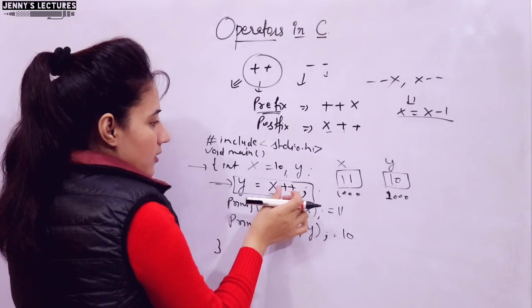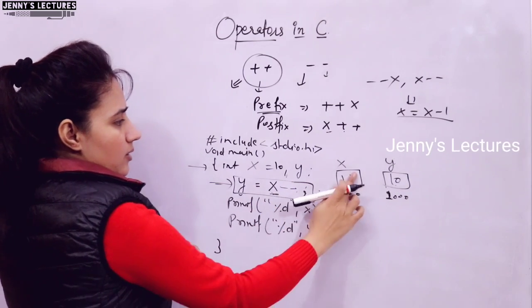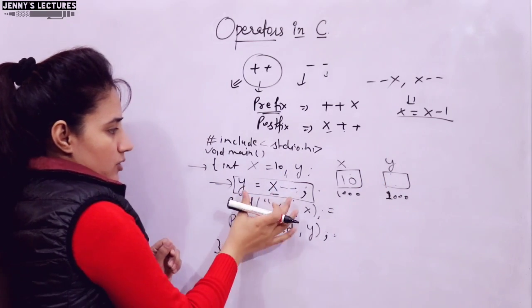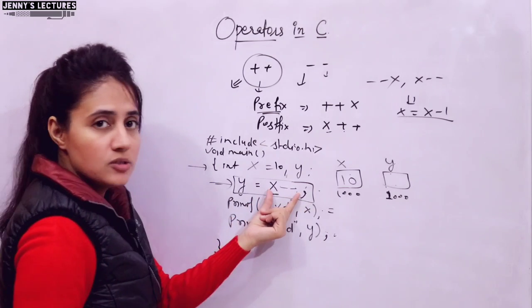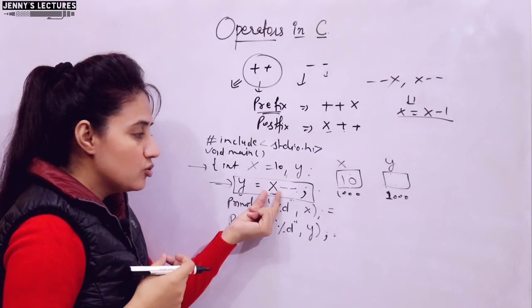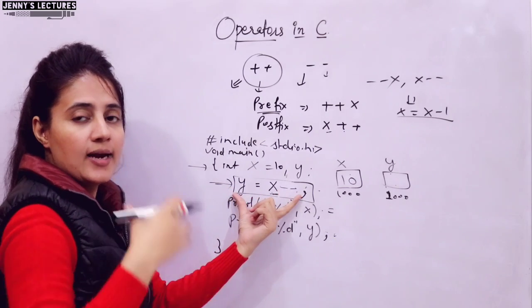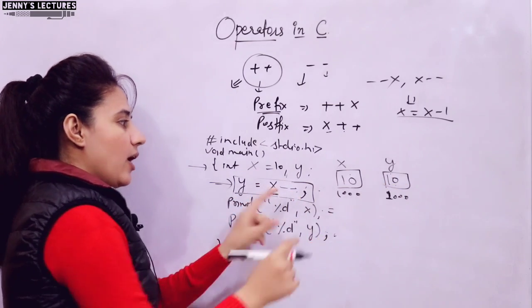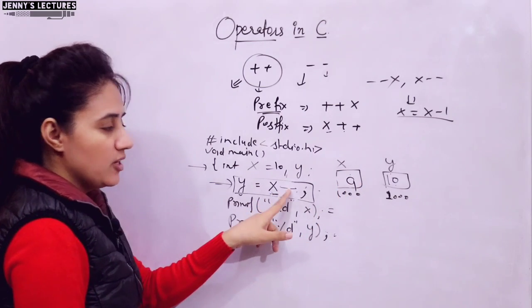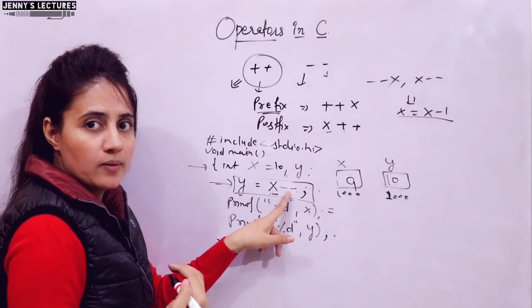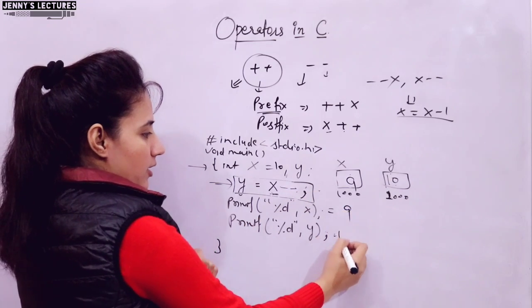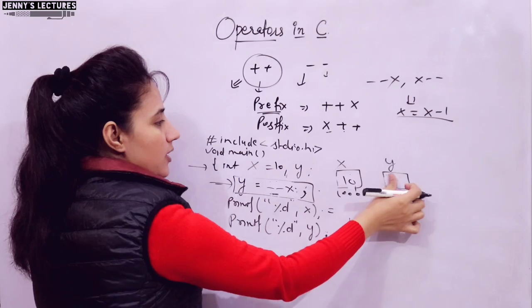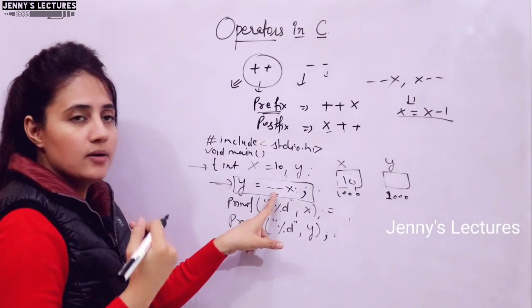Similarly with the decrement operator: if we use y = x-- (post-decrement), the original value of x (10) is used in the expression first and assigned to y, so y = 10. Then x is decremented to 9. So x is 9 and y is 10. If we use y = --x (pre-decrement), first the value of x is decremented from 10 to 9, and then the updated value 9 is used in the expression.